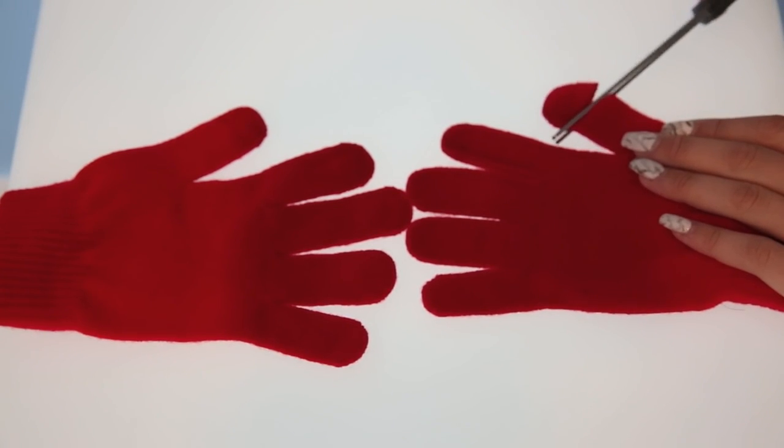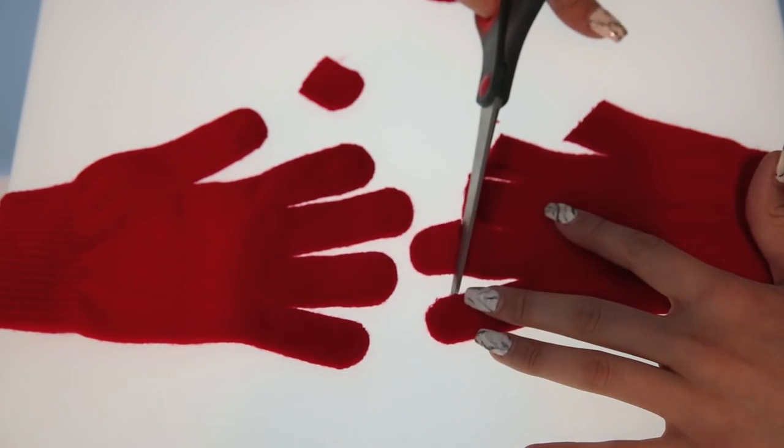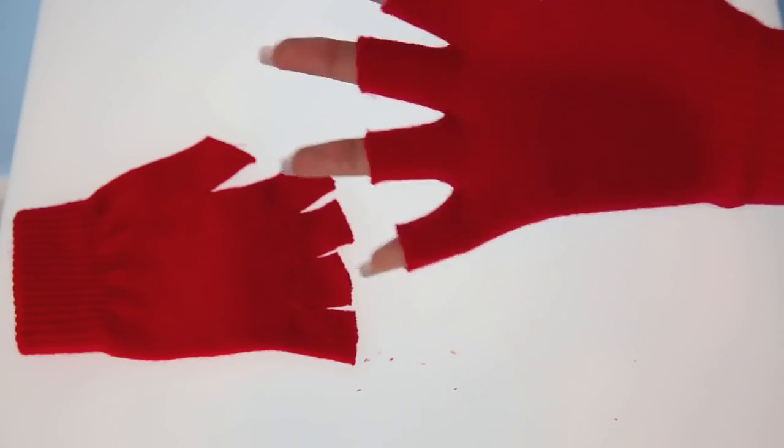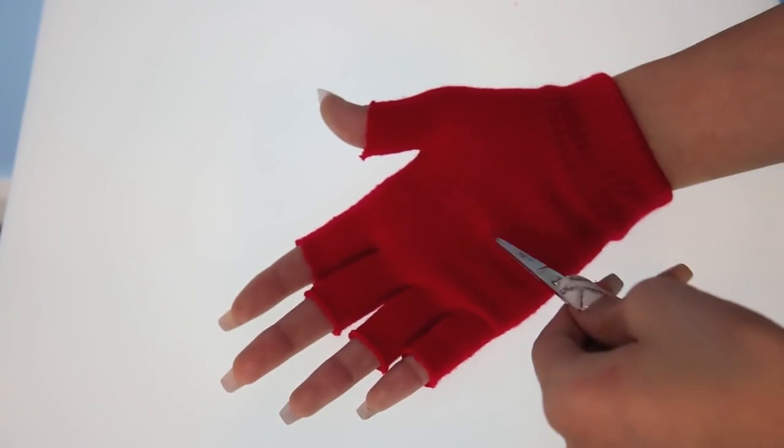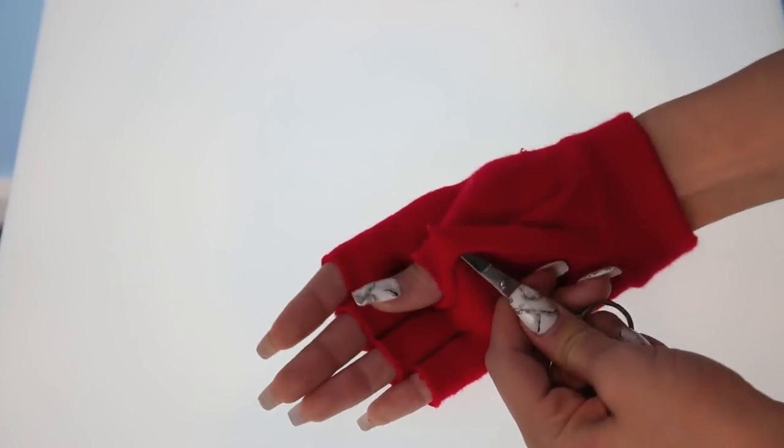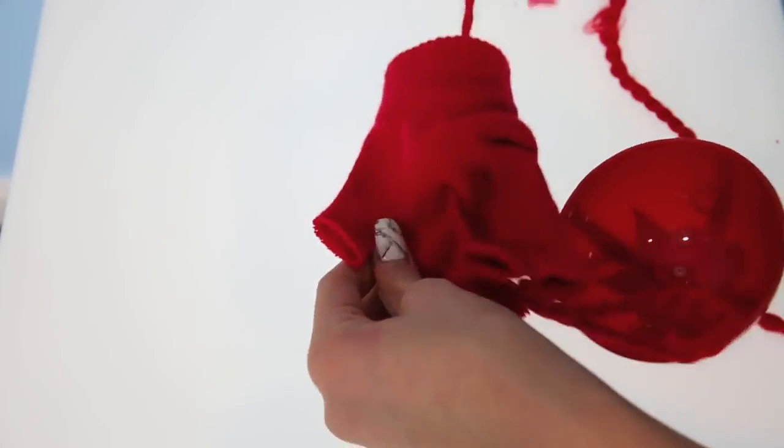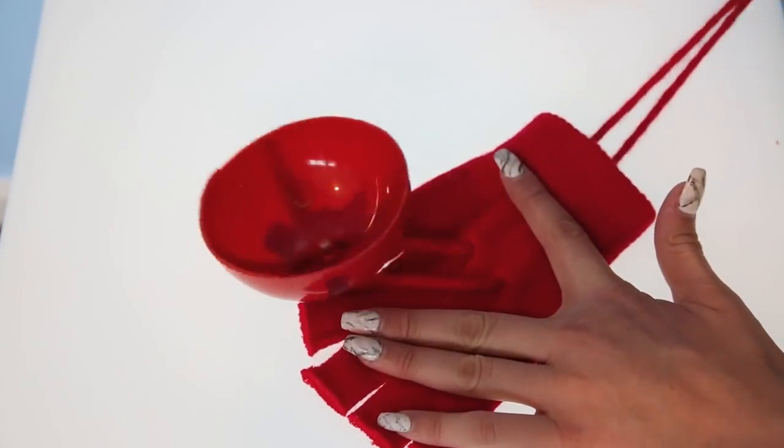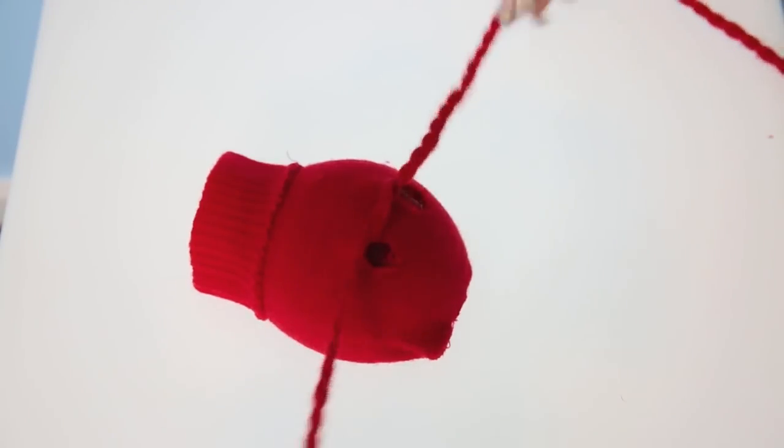Cut the fingers off one of the pairs of gloves. Then make two slits in the center of the glove, then thread the yarn through the holes and tie it.